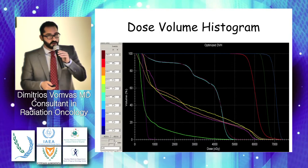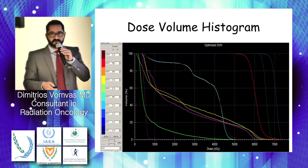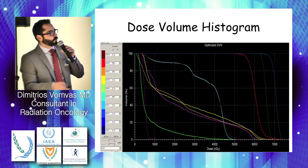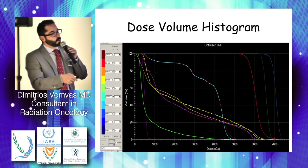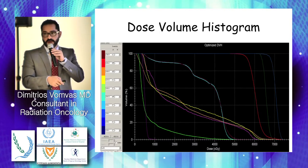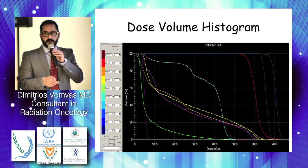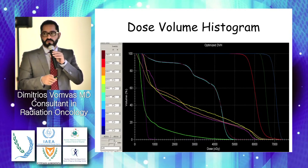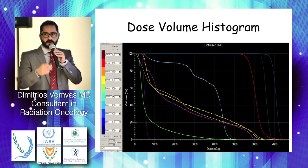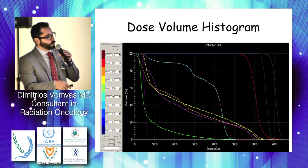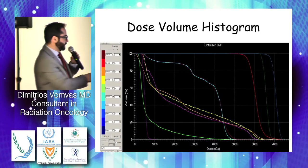In radiation therapy we have a very useful tool called the dose-volume histogram. With this tool we can know exactly the dose delivered to the primary tumor and to the normal tissues around the area of interest.